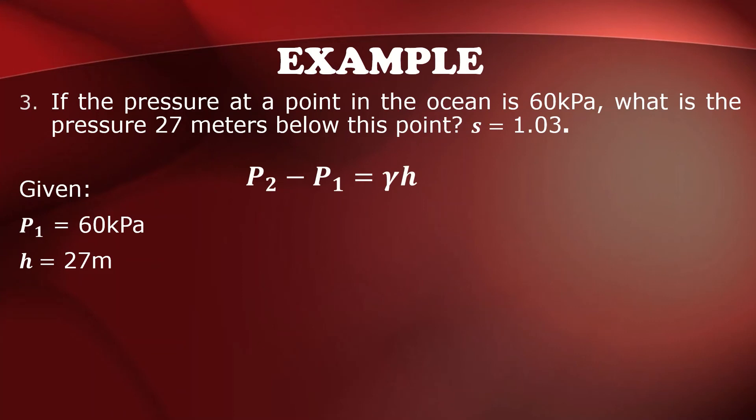So using this formula, P2 minus P1 is equal to specific weight times height. And then adding both sides by P1, so that is P1 plus gamma H. And then P1 is 60, gamma is 9.81, but multiplied by specific gravity of the ocean water,